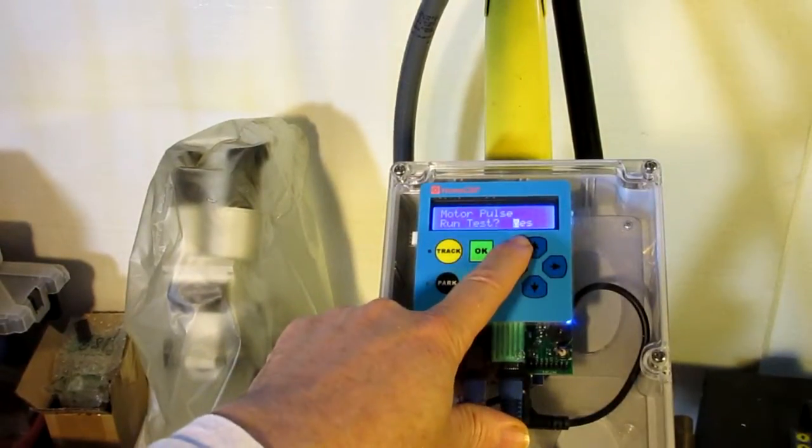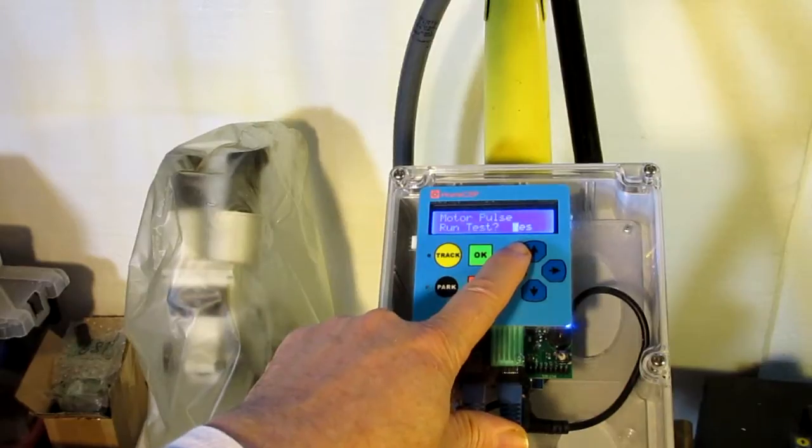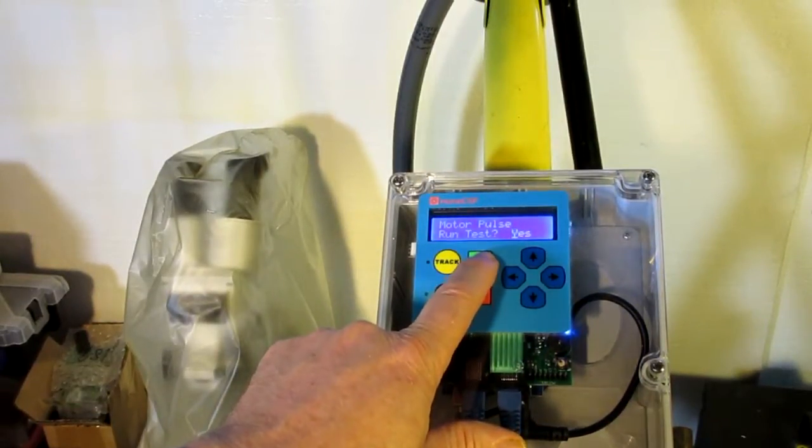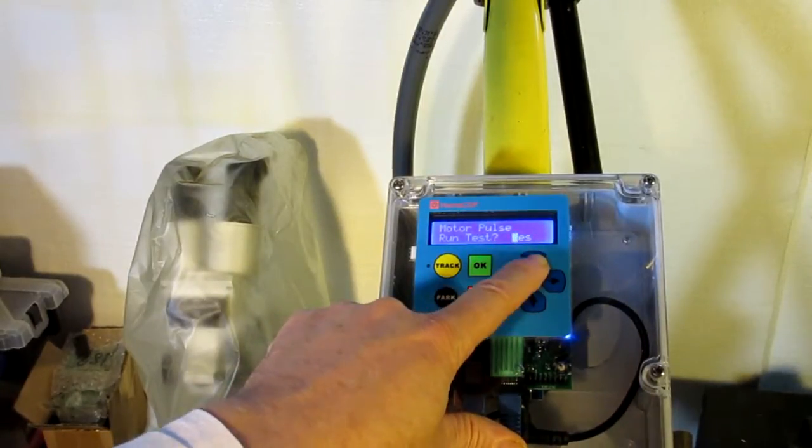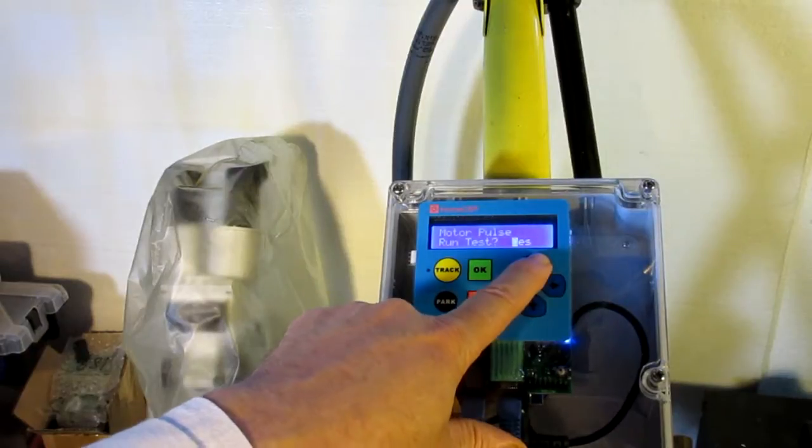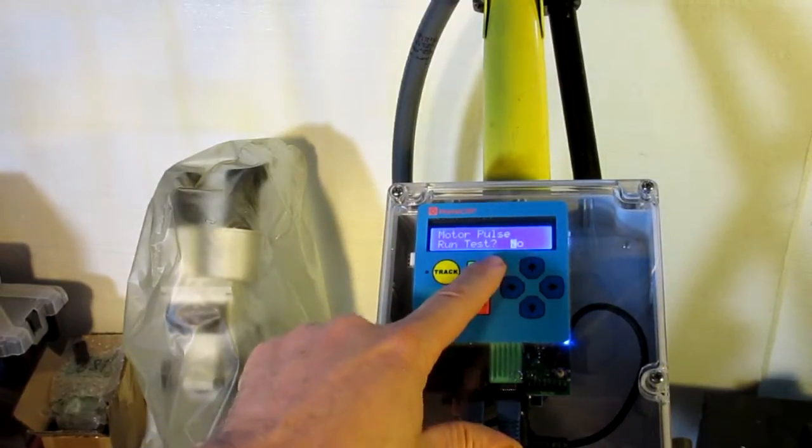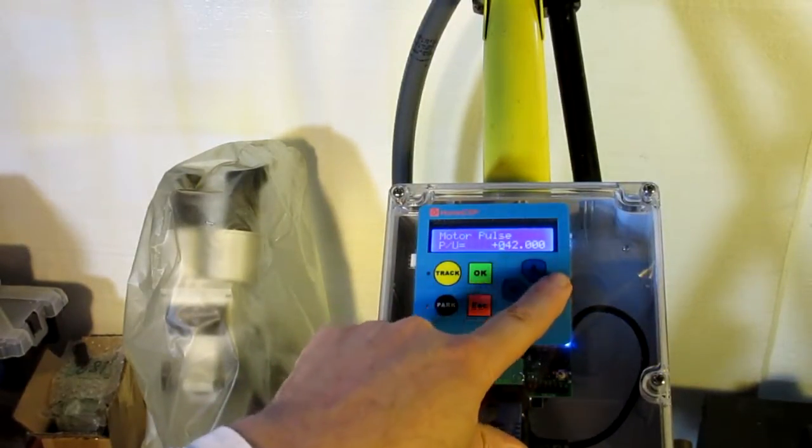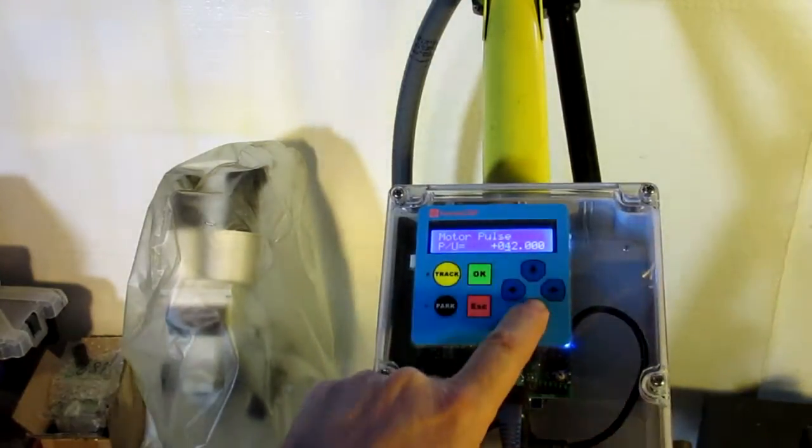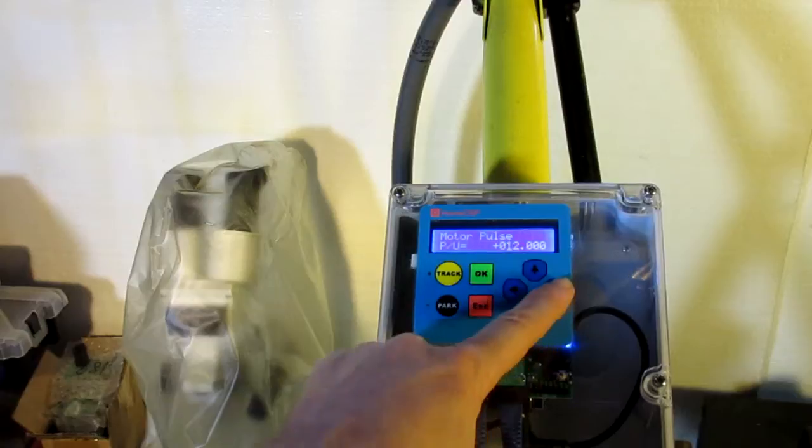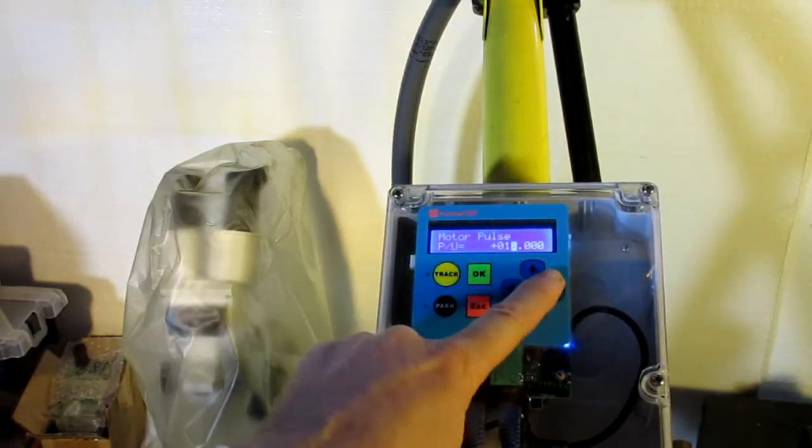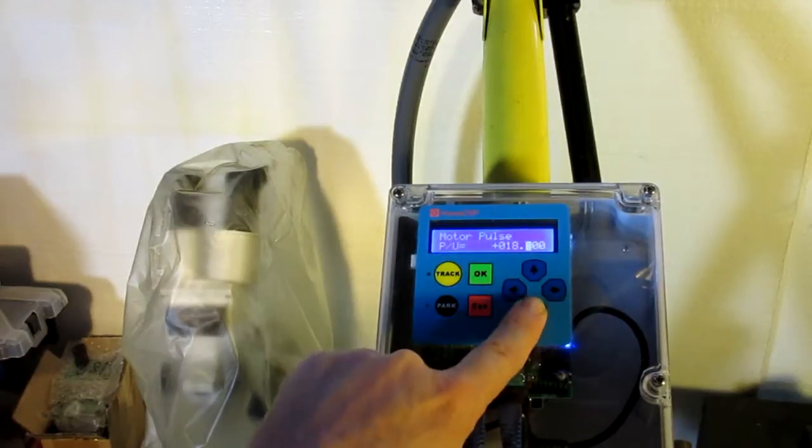So, now we're going to run the pulse test. Except this time, we don't need to do the test. We can use the same value we got from the other motor. So, I'm going to say no. And now we're just letting us type in the actual value to use, which, remember, it was 18.51.